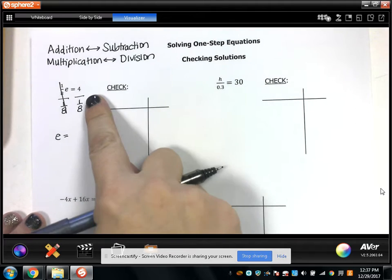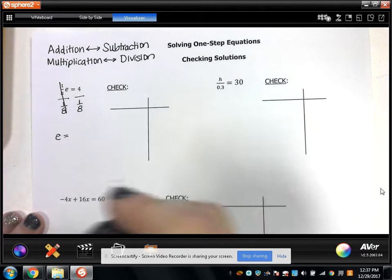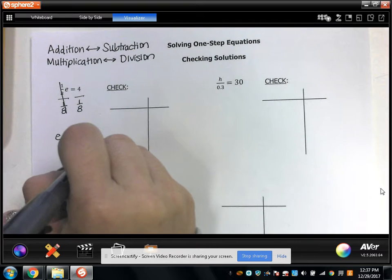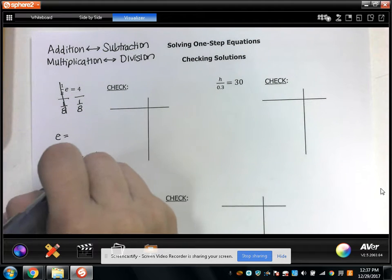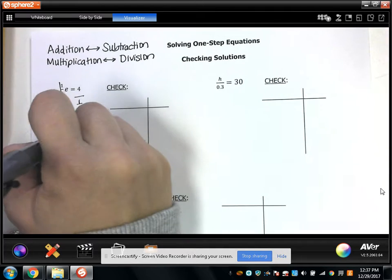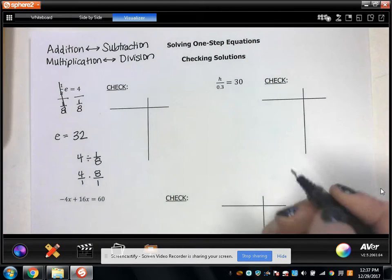And then here, this is 4 divided by 1 eighth. You could use a calculator, or you could say to yourself, 4 divided by 1 eighth is the same thing as 4 times the reciprocal, and I would get 32.